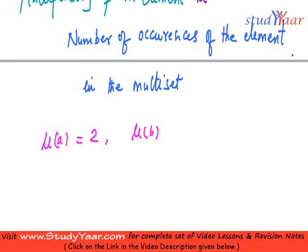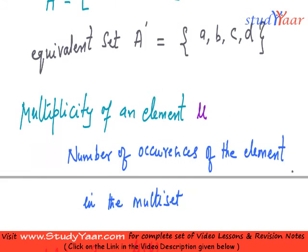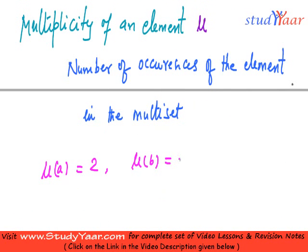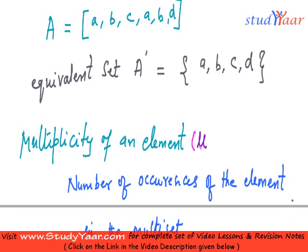Similarly, mu of b is, let us find out, b has occurred once, b has occurred twice. So, mu of b is also 2 and mu of c is equal to 1 and mu of d is also equal to 1. So, that was the concept of multiplicity of an element represented by mu.